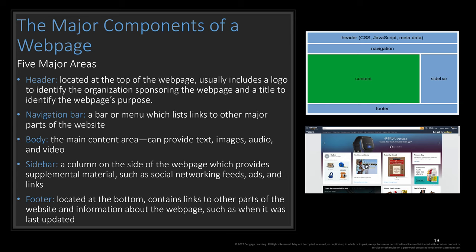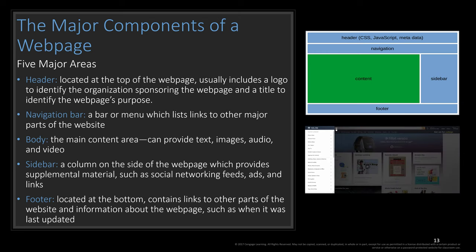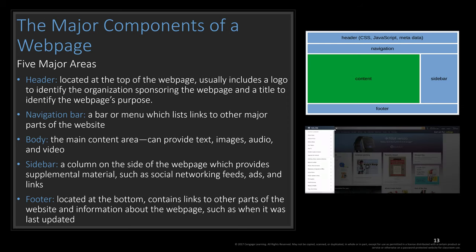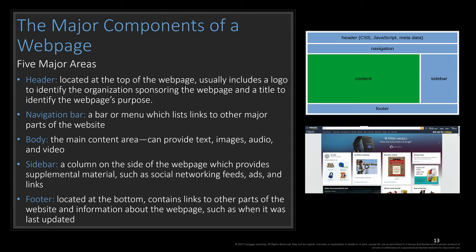Now let's look at what makes up a website or web page and its different components. A web page normally has a header, which contains CSS (Cascading Style Sheets), JavaScript, and metadata. The second component is navigation. Traditionally we saw navigation at the top, matching our computer's file and menu structure, but now navigation has moved to the left or via a dropdown.